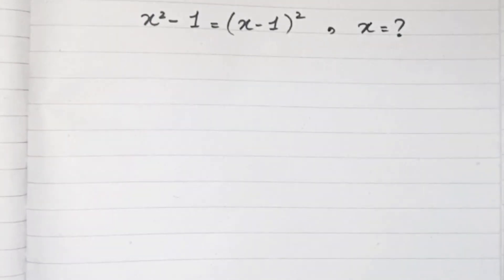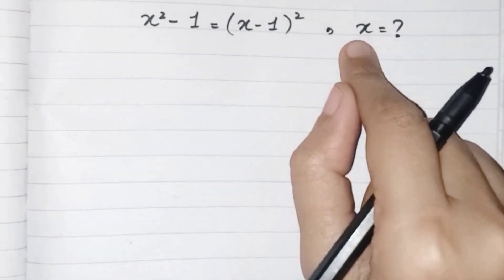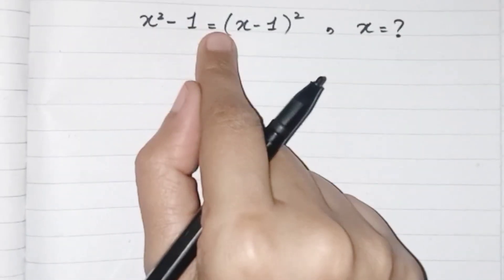Hello everyone, I am back with another amazing question. Today we have to find the value of x where the given equation is x² - 1 equals to (x - 1)².